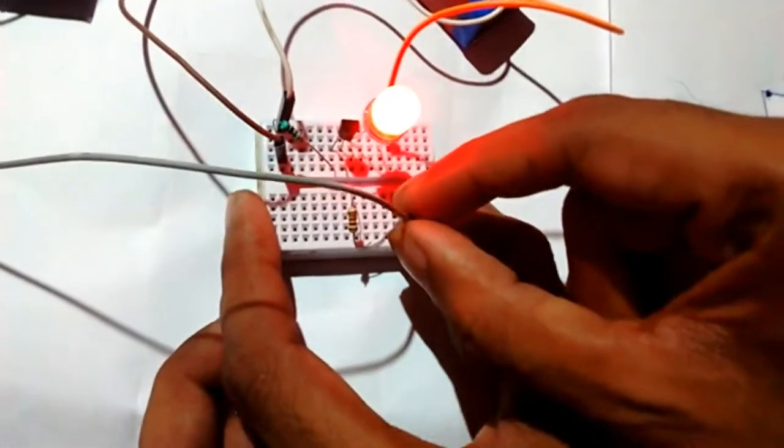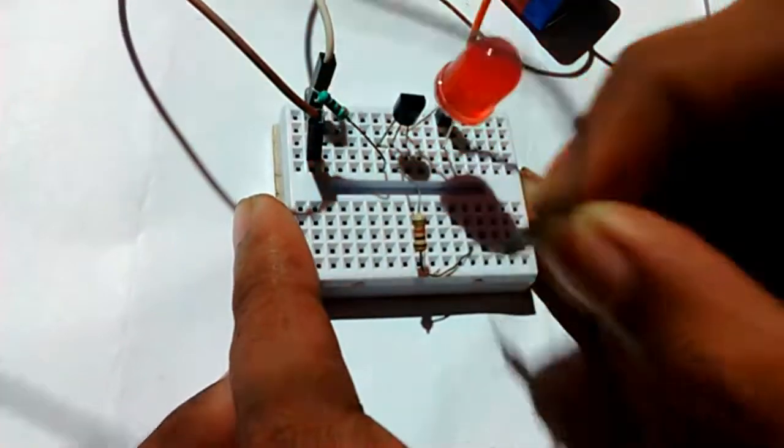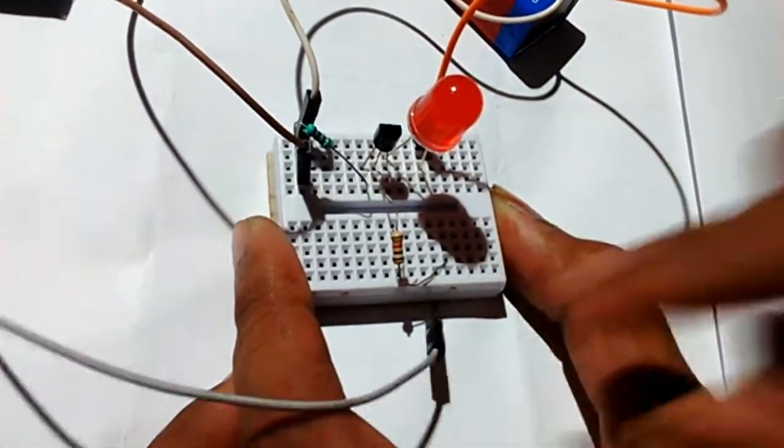So you see, now I am connecting this base terminal to the positive terminal of the battery. If I remove this, you see the LED turns off again.